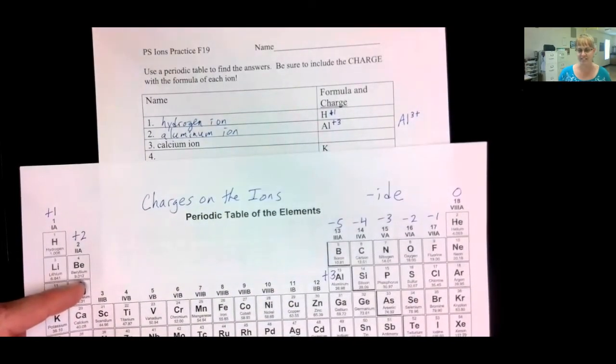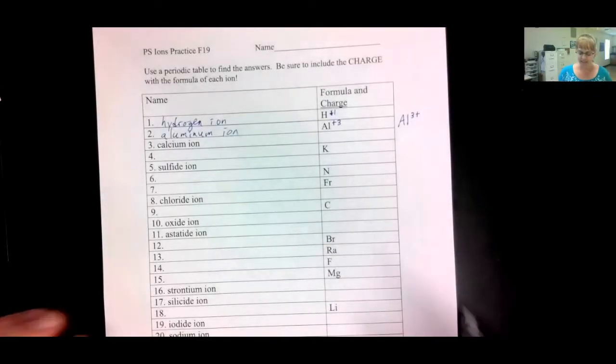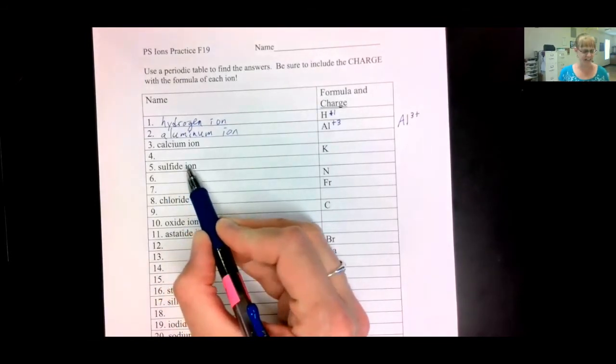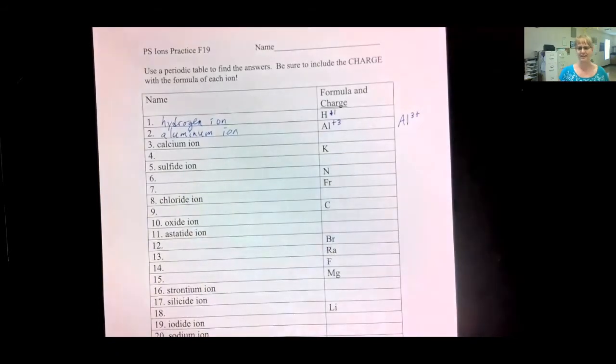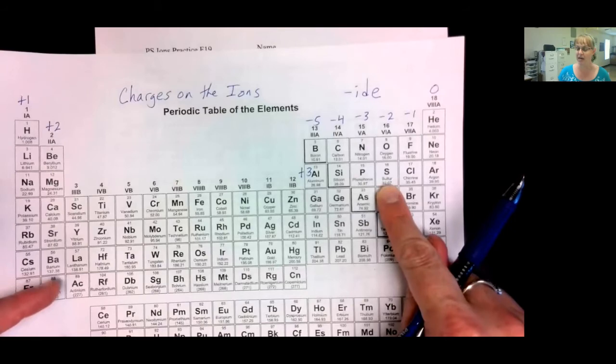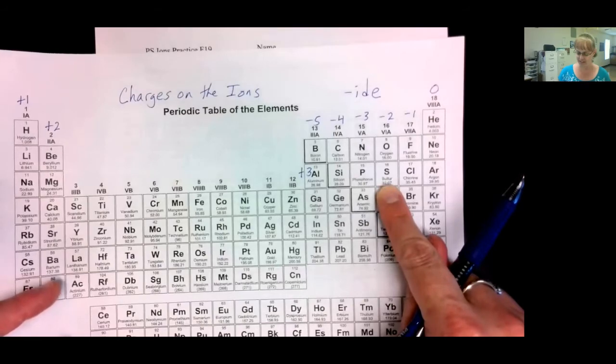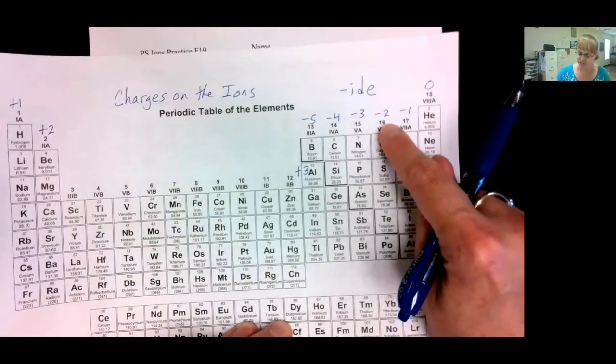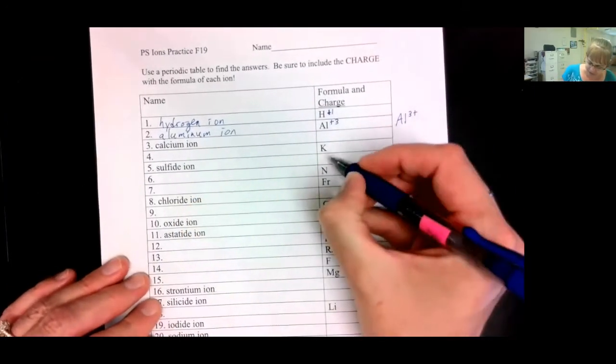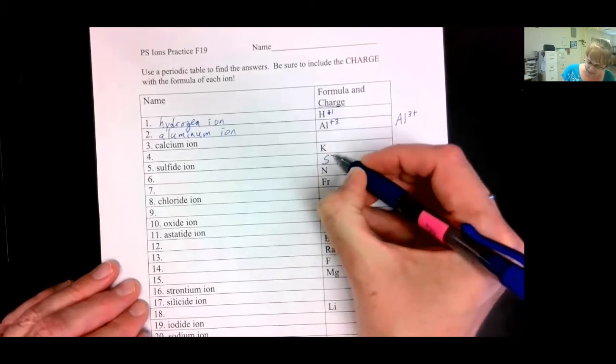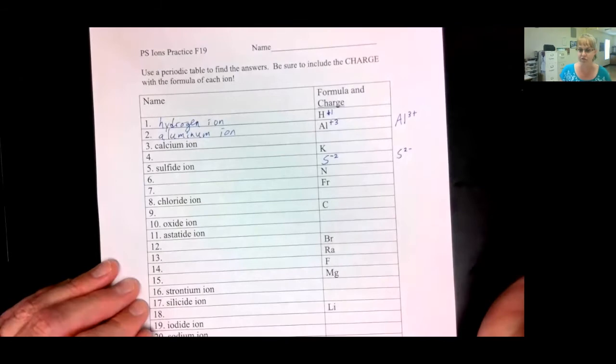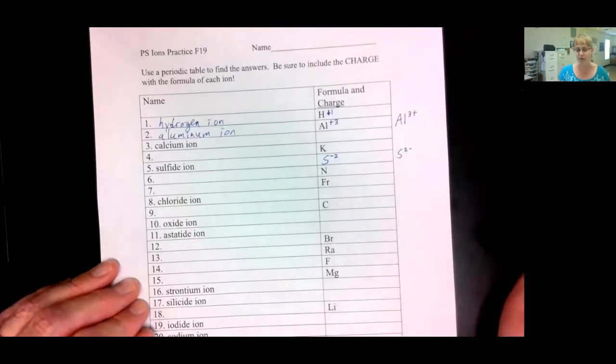You do number three, calcium. Let's skip ahead to the sulfide ion. Sulfide? I can't even find sulfide on the periodic table. But I can find sulfur. Sulfur atoms become sulfide ions. So, sulfur or sulfide gets a negative two charge. And the symbol was a capital S with a negative two. Or you can write S two minus. That would also be acceptable.